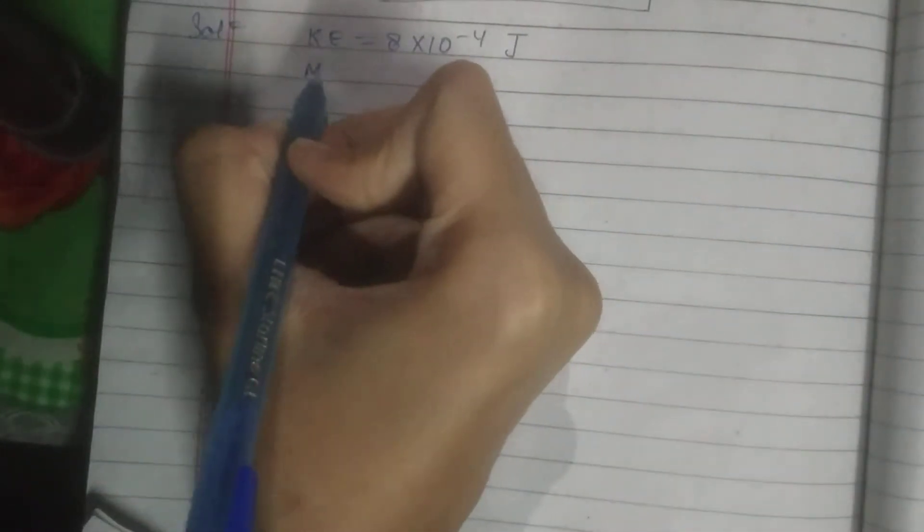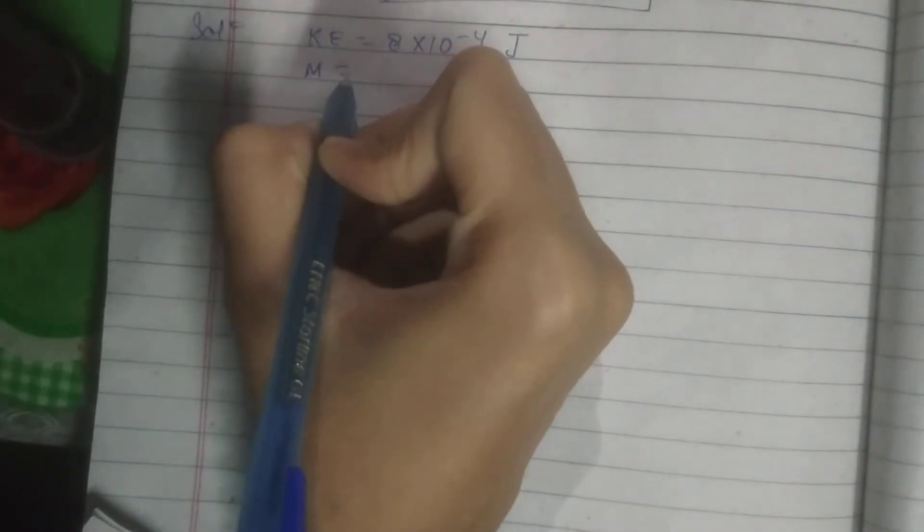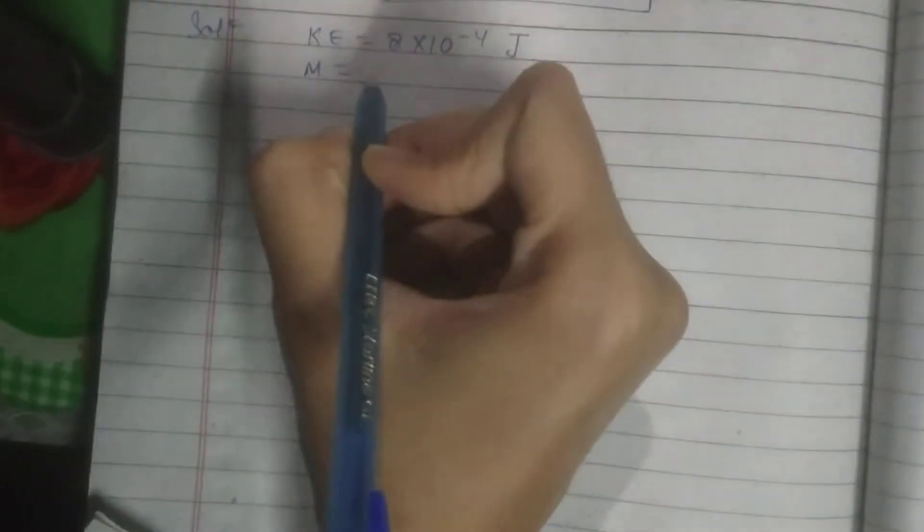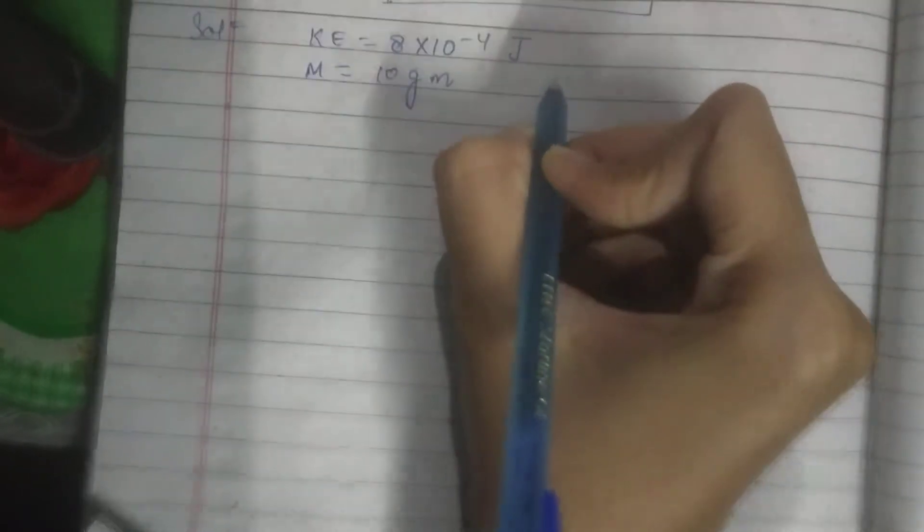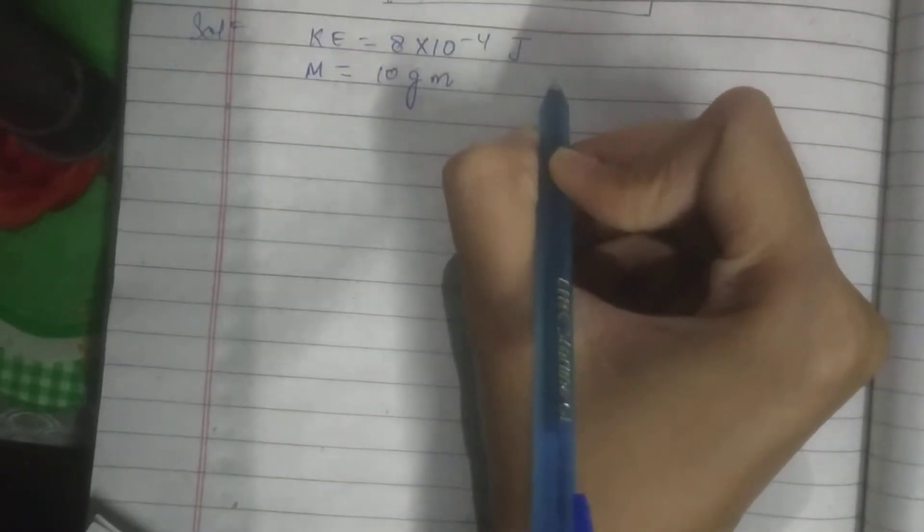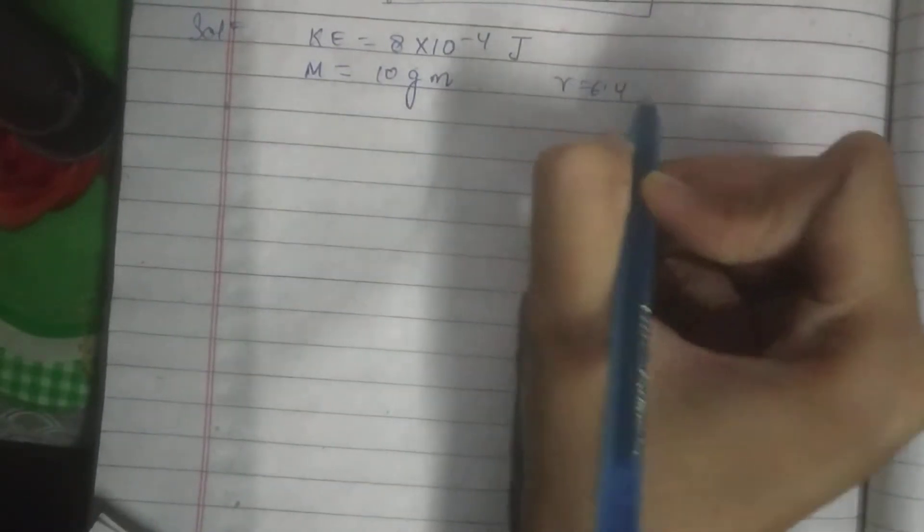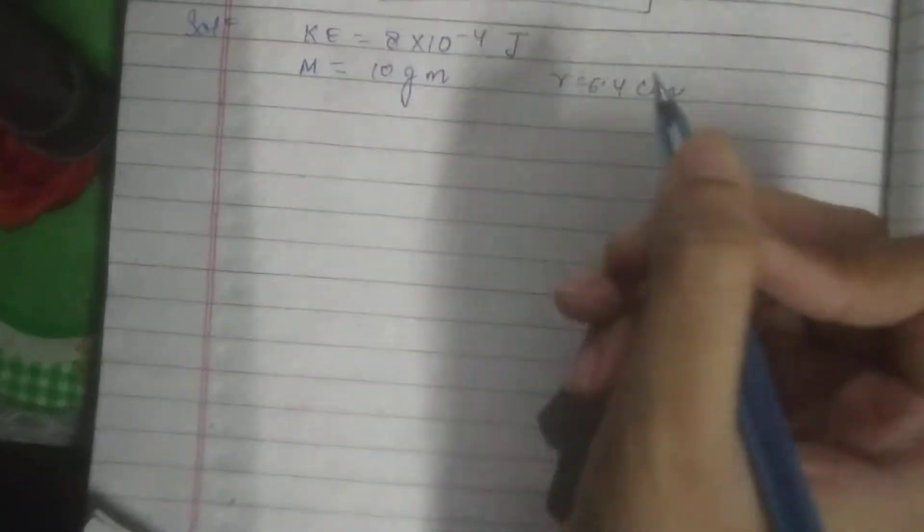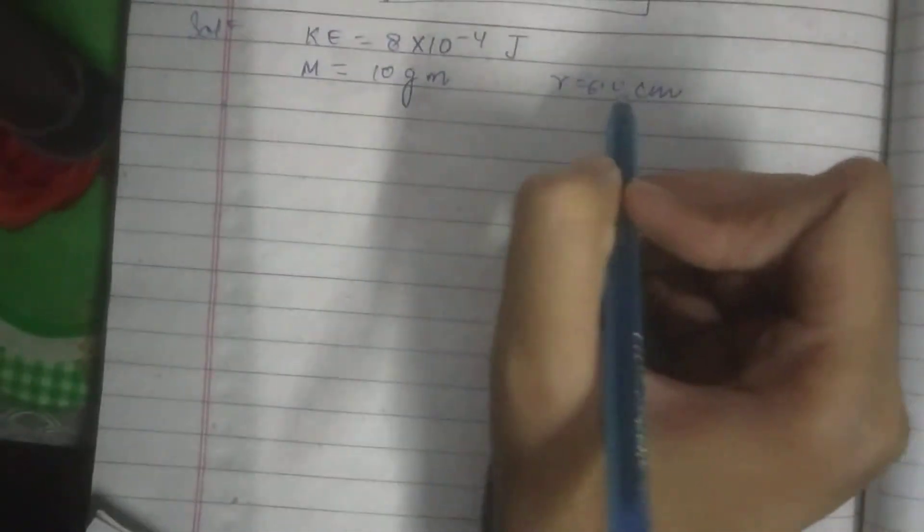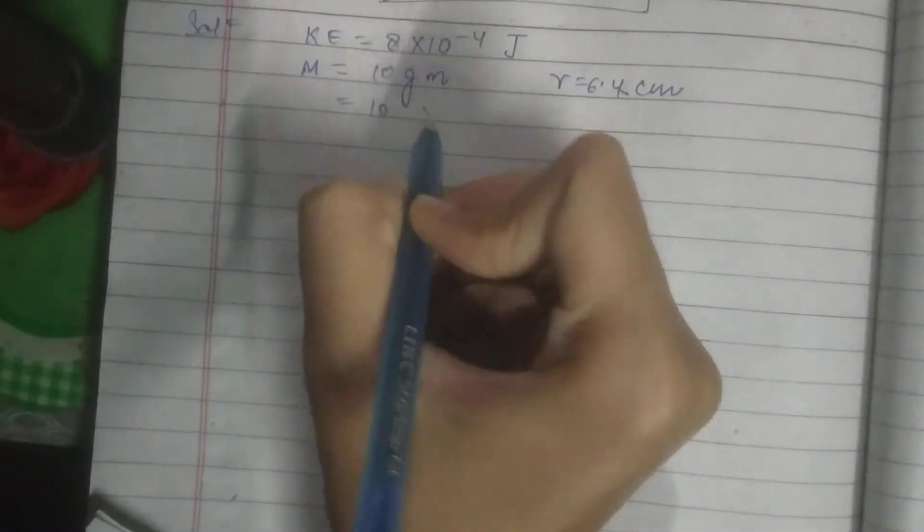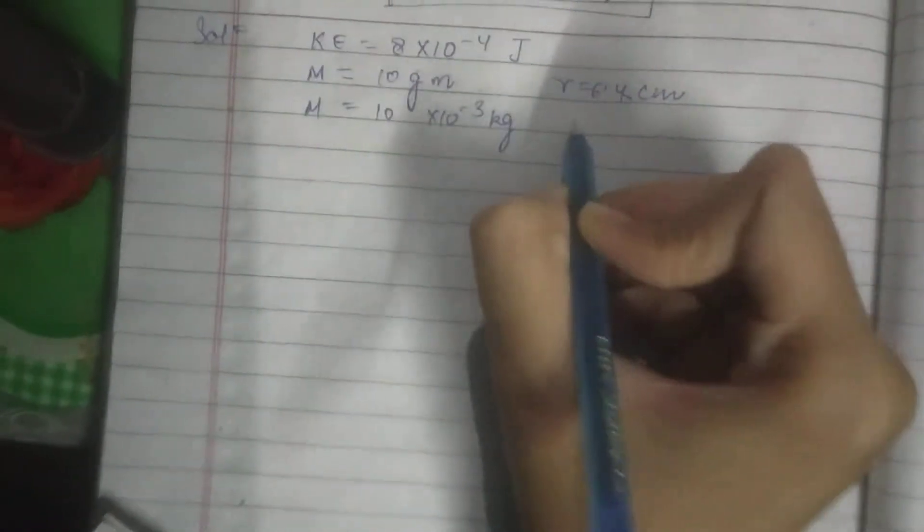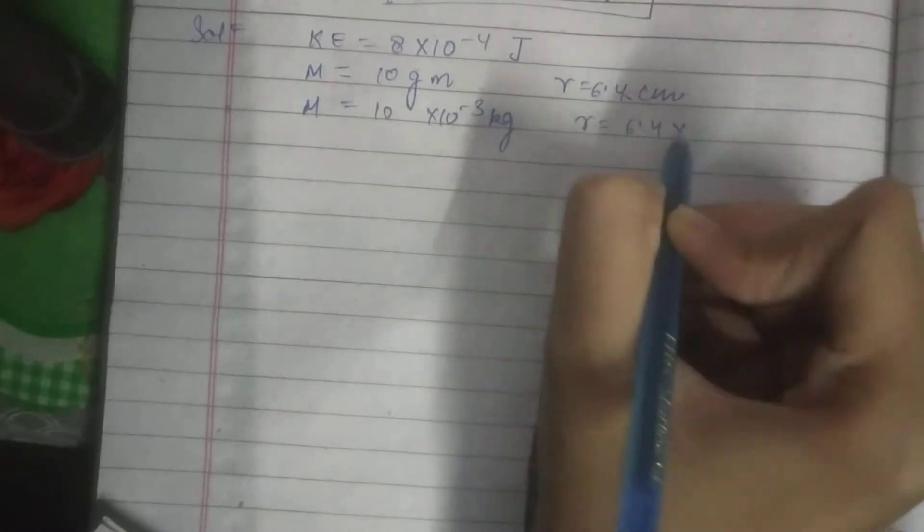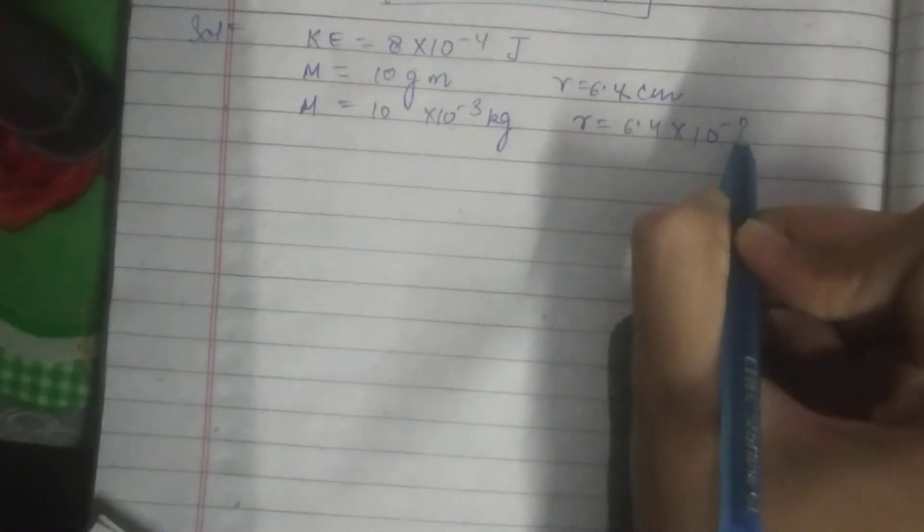And mass of a particle is 10 gram and radius is 6.4 cm. We will convert all the values in the SI unit: 10 into 10 to the power minus 3 kg for mass and radius is equal to 6.4 into 10 to the power minus 2 m.